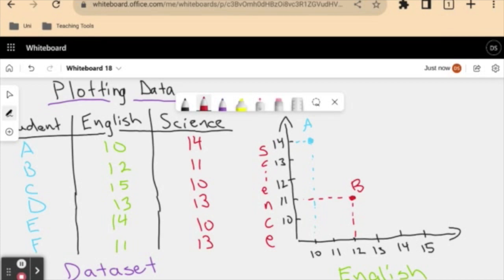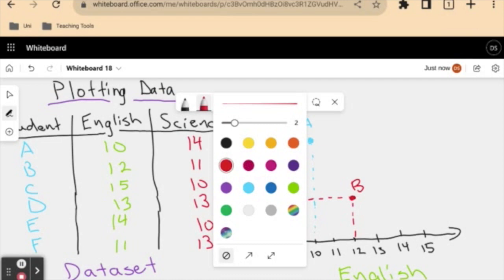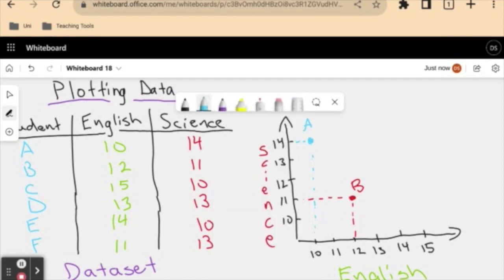And you can pause the video and try to find all of these points on your own, but I will just quickly draw the remaining points here. I'll do them all in blue. We have student C got 15 in English and 10 in science. That can be student C.